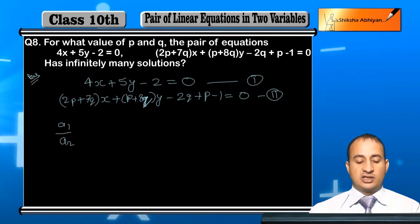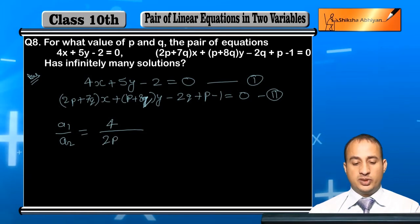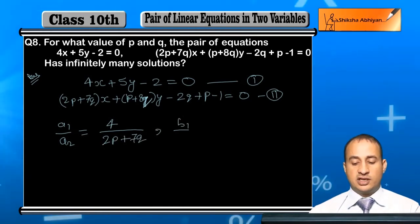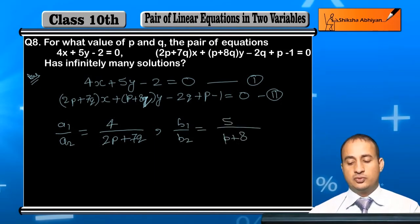How much will a1 by a2? The first equation is 4. The second equation is 2p plus 7q. Similarly, b1 by b2 is equal to 5 upon p plus 8q.